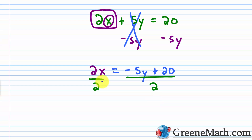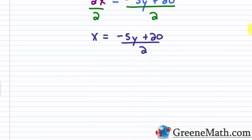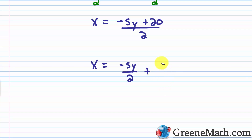So 2 over 2 is 1, giving me just x on the left. This equals negative 5y plus 20 over 2. You could split that up as negative 5y over 2 plus 20 over 2, and since 20 over 2 is 10, you could also write x equals negative 5y over 2 plus 10. Either answer is acceptable.